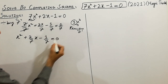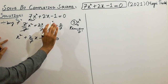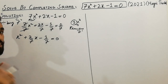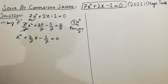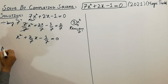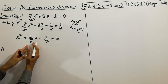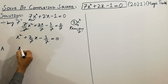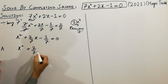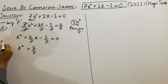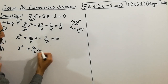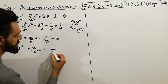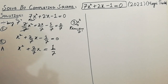Must remember, in solving the equation by completing scale, the coefficient of x squared must be equal to 1 — that's the first step. The second step is to shift the constant term to the right-hand side. So: x squared plus 2 over 7 x is equal to plus 1 over 7. That's the second step.